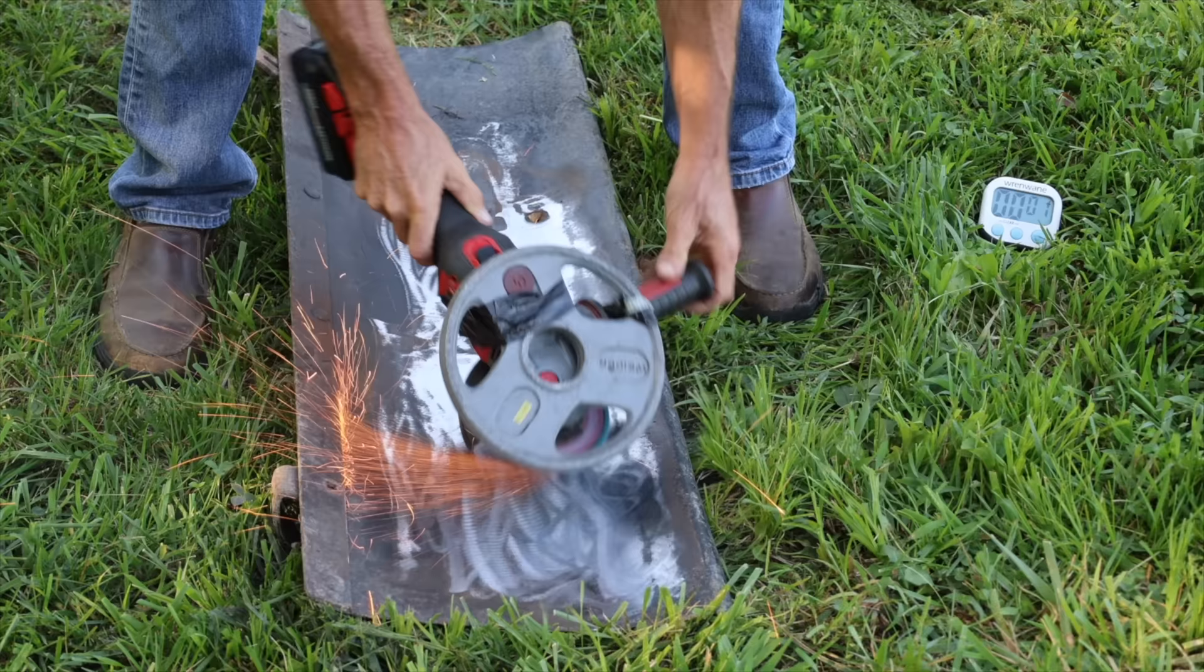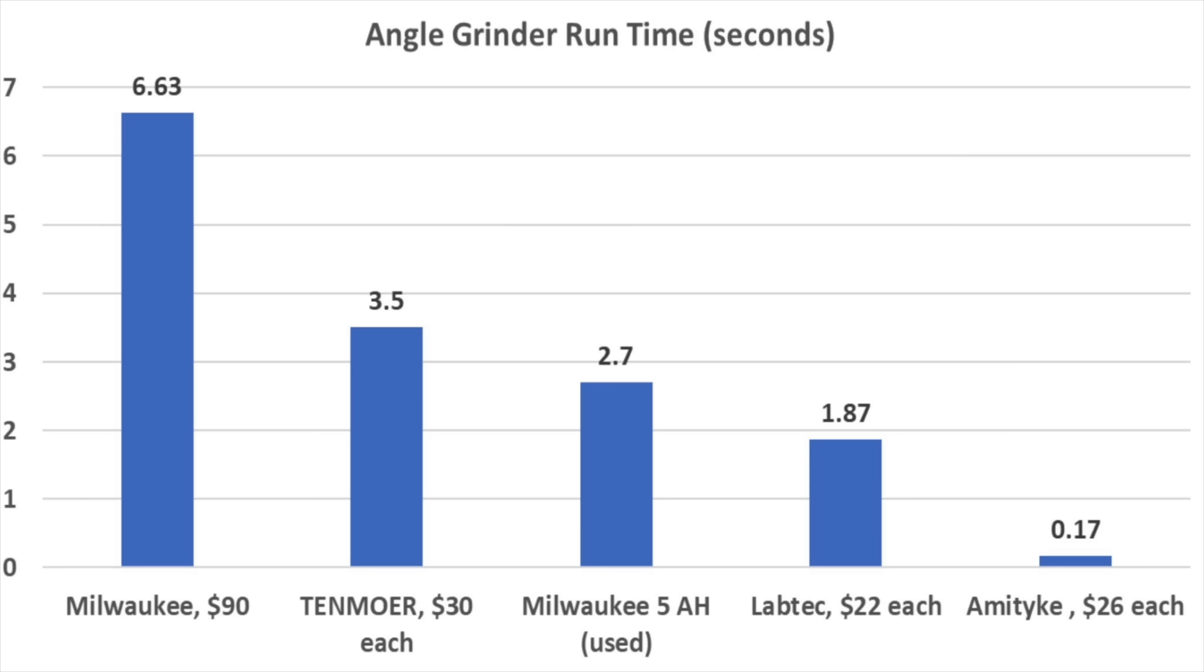The genuine Milwaukee battery lasted over six and a half minutes and made a lot of progress sanding the paint off of the metal. Once again the Emityke finished in last place.